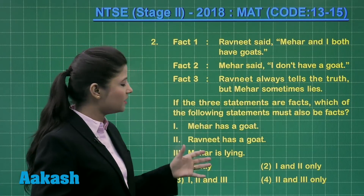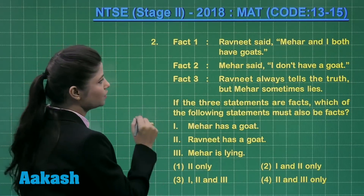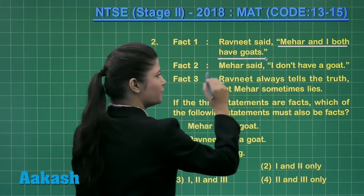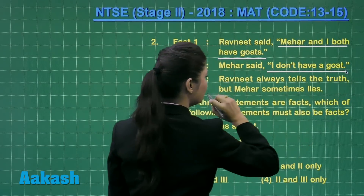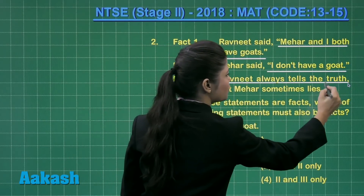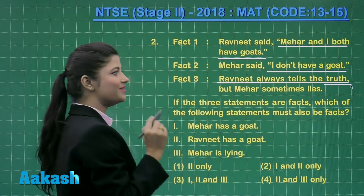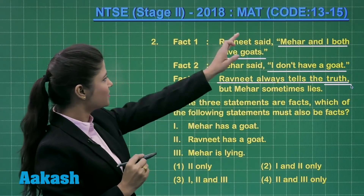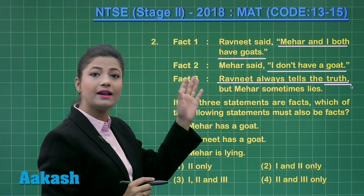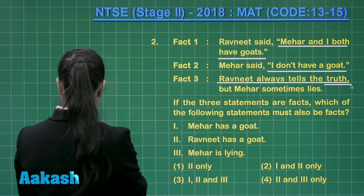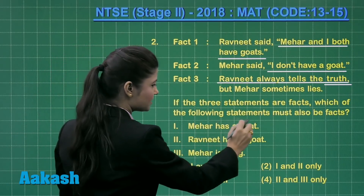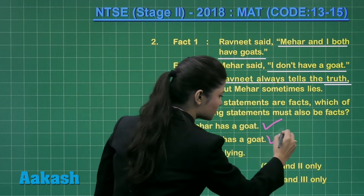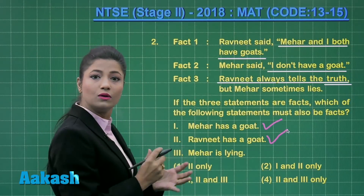Considering the facts: Ravneet said 'Meher and I both have goats,' and Meher said 'I don't have a goat,' while Ravneet always tells the truth. Since Ravneet always tells the truth, the first fact is totally correct — meaning Meher has a goat, which is completely true, and Ravneet has a goat, which is also true.